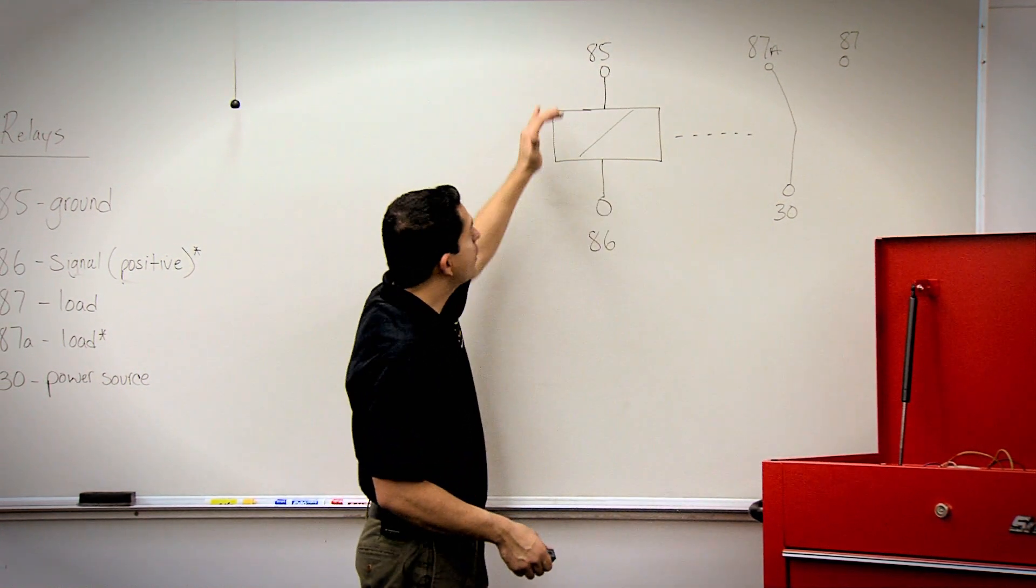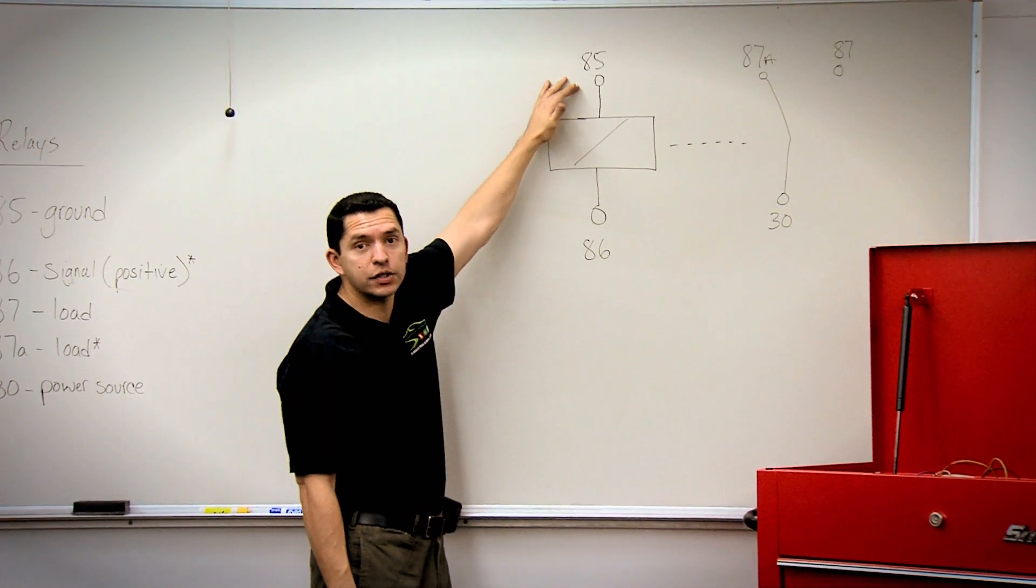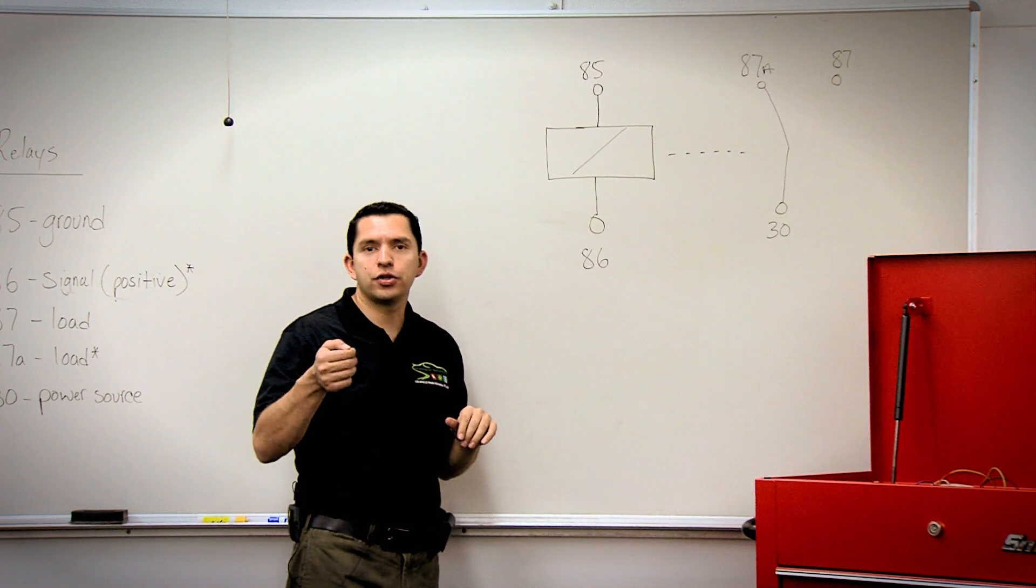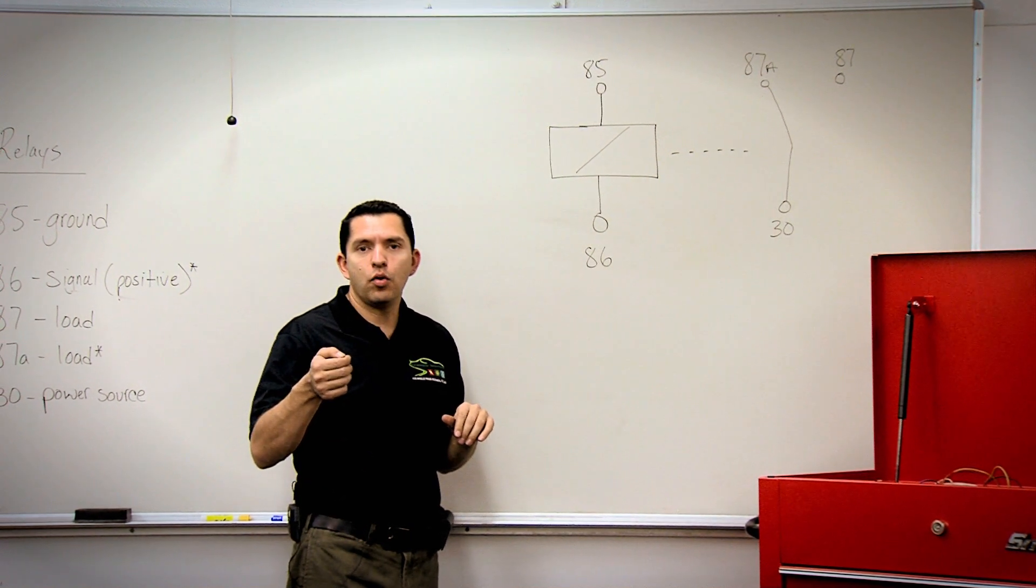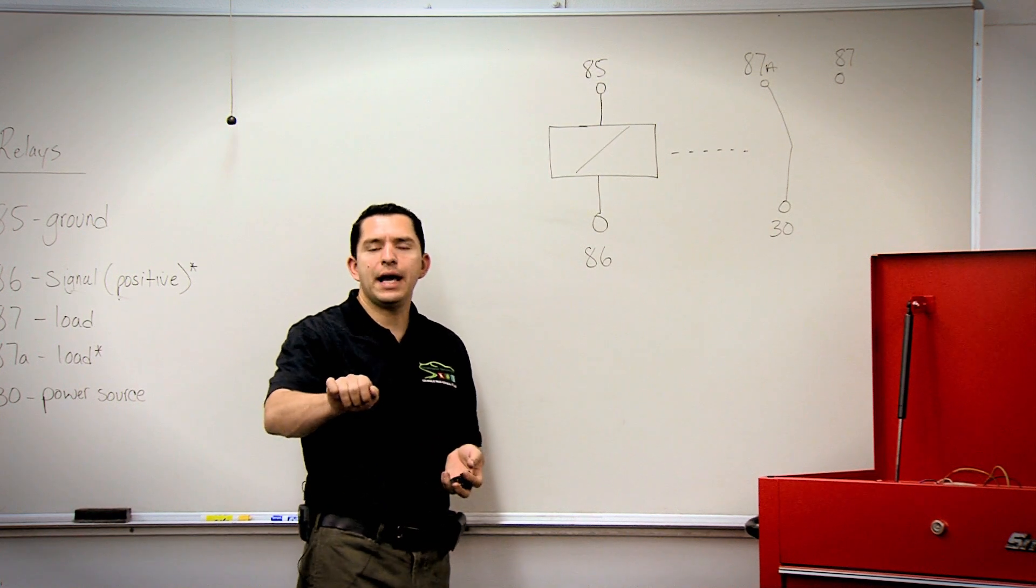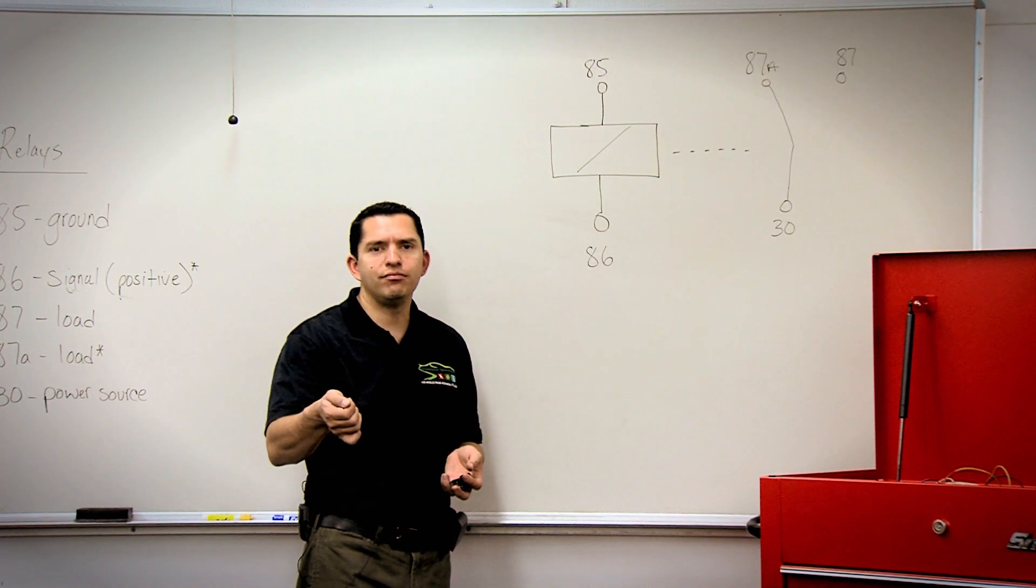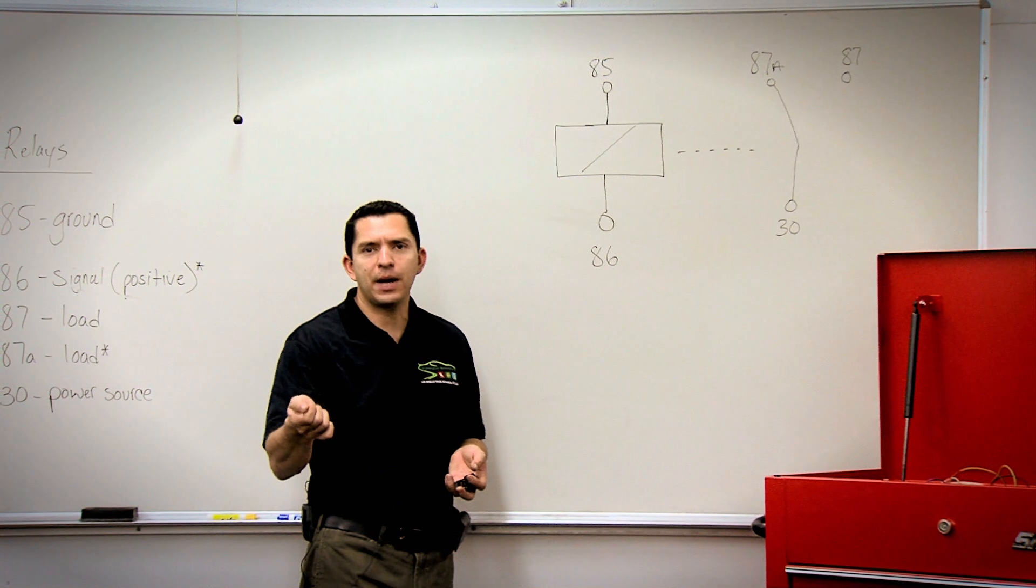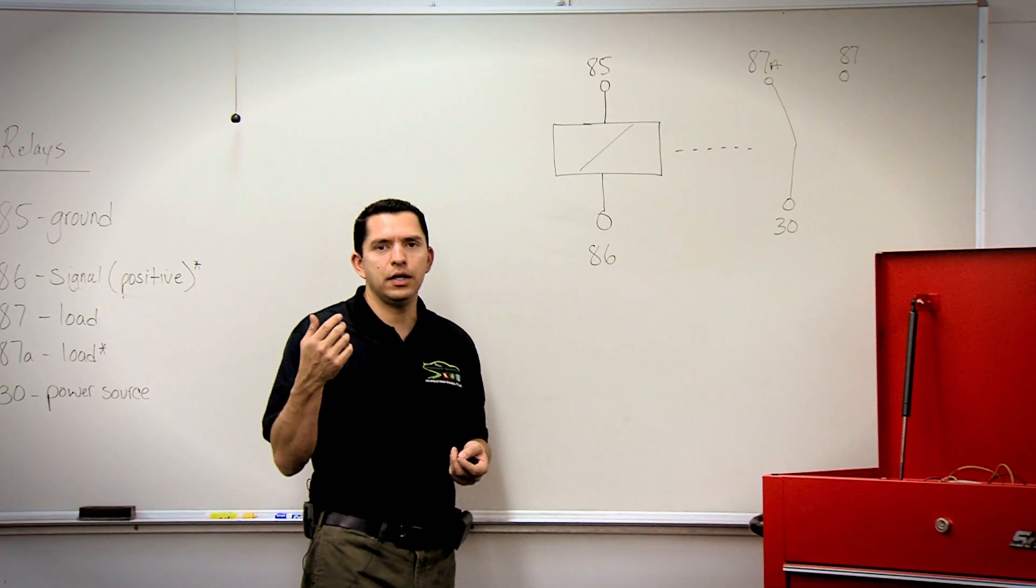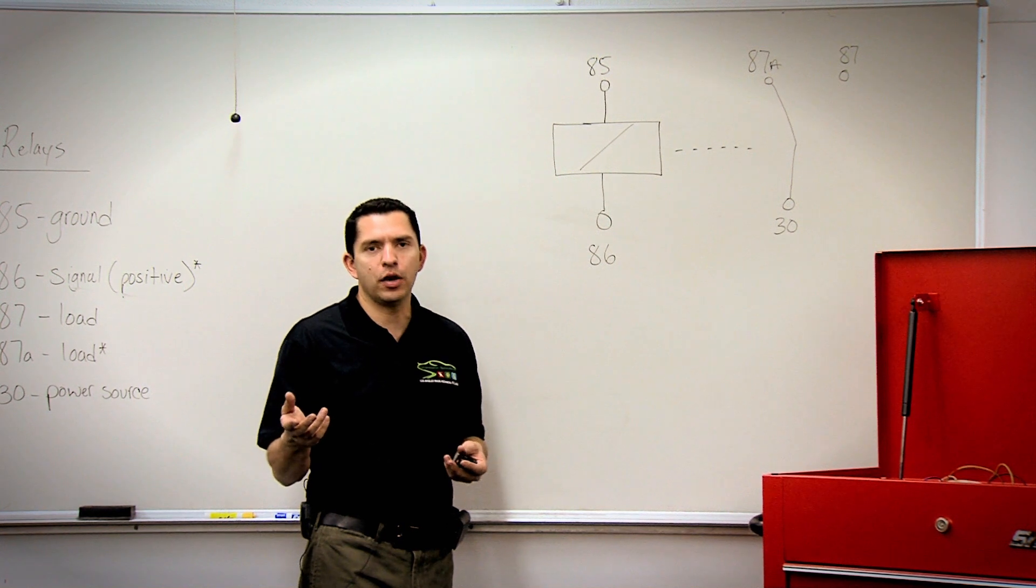When we have our ground to 85 that's constant. If we have a switch in the dash to turn on the headlights, or a starter motor switch, we really wouldn't want 300 amps at our ignition switch because there's more danger for fires and other safety issues.